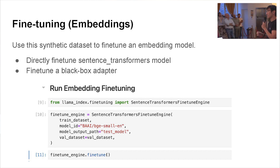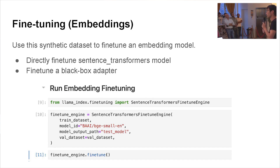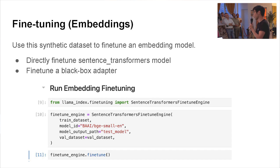Given this synthetic dataset, you have the question and the piece of context. Mix it with the rest of the corpus, use a positive label of this question with this context, and a negative label of this question with any other piece of context, and fine-tune an embedding model. You can directly fine-tune a sentence transformers model — a Hugging Face model — and sentence transformers has functions to just train. We abstract that away with our fine-tuning abstractions, making it easy to fine-tune a model and plug it into the rest of your RAG system.